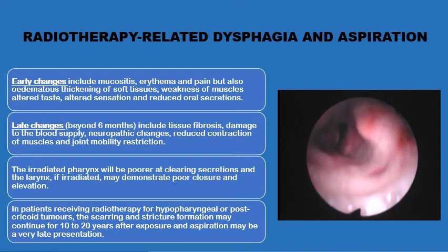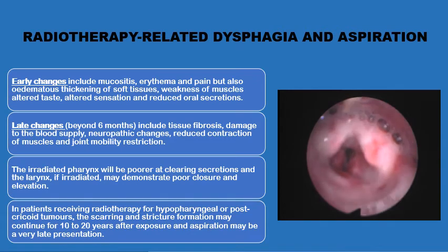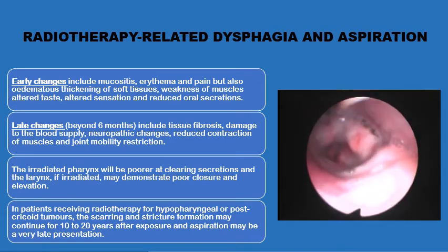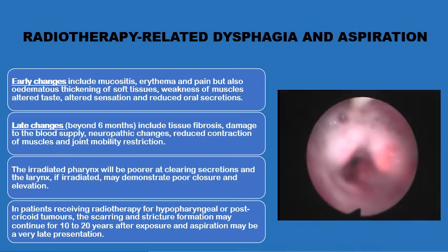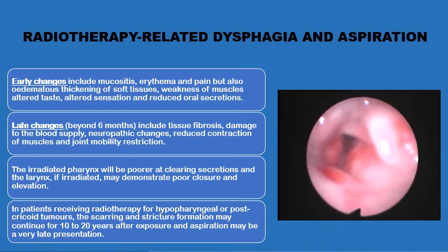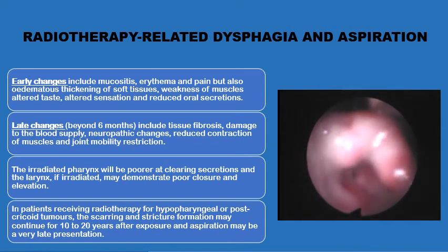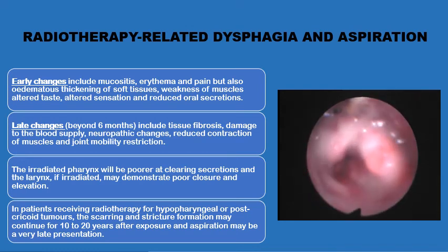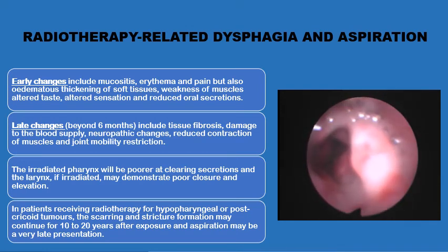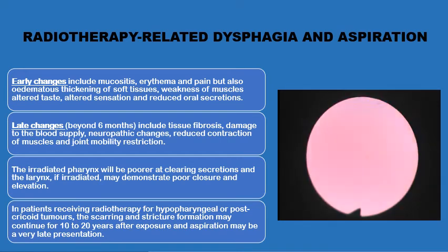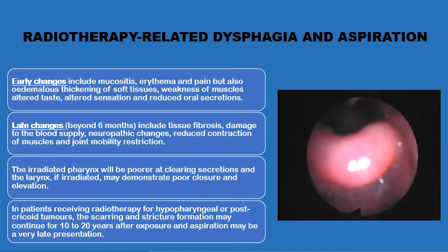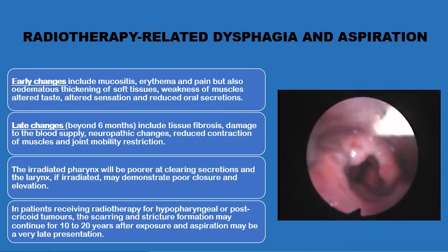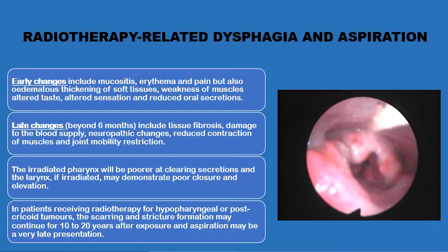Radiotherapy is another independent general factor in the development of pharyngeal dysphagia and aspiration. Early, within the first six months, it causes mucositis, erythema, and pain, and also weakening of muscle contractions — as seen in patients with nasogastric tubes who have difficulty clearing saliva from the pharynx. After six months, fibrosis and scarring starts and continues for up to 10 to 20 years, with scarring, contractures, and even stenosis of parts of the pharynx.